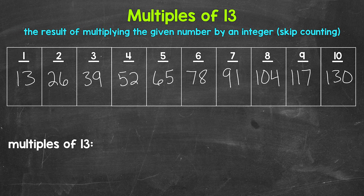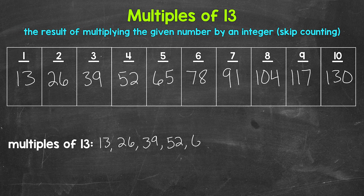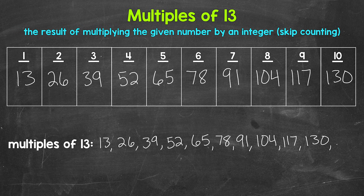Now let's write these multiples in a list below. You'll notice we are just counting up by 13. Like I mentioned earlier, another way to think of multiples is to skip count. So we have 13, 26, 39, 52, 65, 78, 91, 104, 117, 130 — and these continue on.